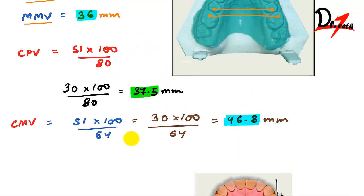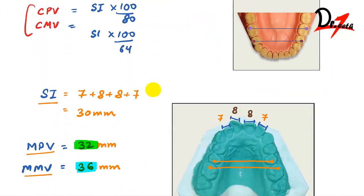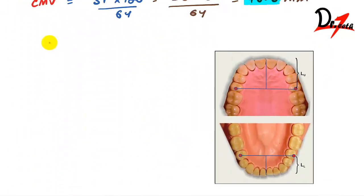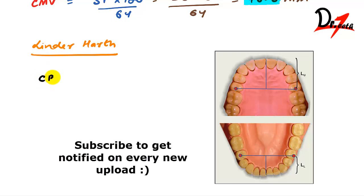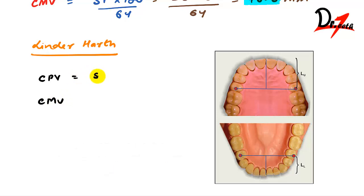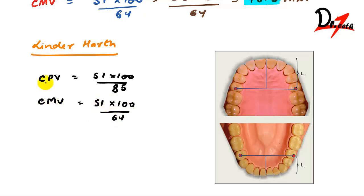Next is the Linder-Hearth analysis, which is very similar to the Pons analysis — only the formula changes. The Calculated Premolar Value formula becomes SI × 100/85 instead of SI × 100/80. The Calculated Molar Value formula remains SI × 100/64, same as Pons. So the only difference is the premolar formula changes from 80 to 85.